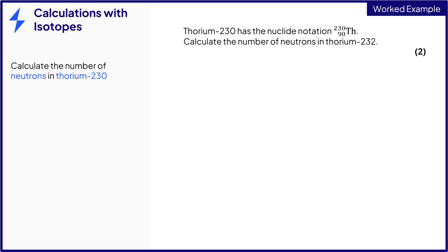First let's calculate the number of neutrons in thorium-230. The number of neutrons is the difference between the nucleon number and the proton number. This is 140. Identifying this is the first mark.